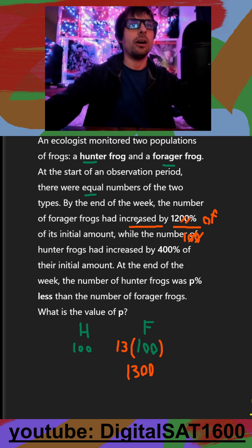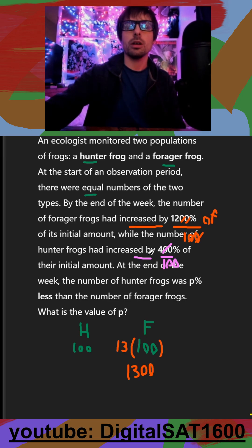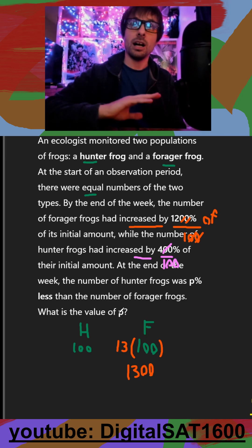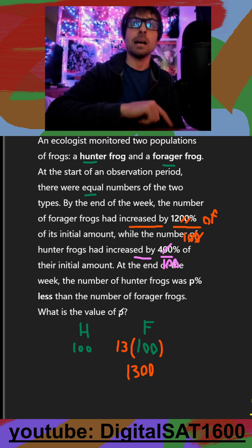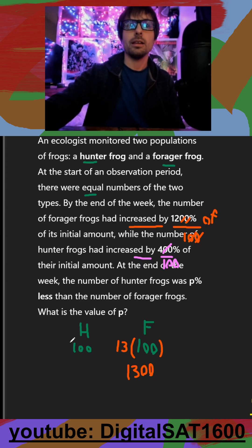Now let's see how the hunter frogs change. The hunter frogs increased by 400% — divide by 100, that turns into four. Since it's 'increased by,' it would be times five rather than times four. So we actually end up with 500 hunter frogs.